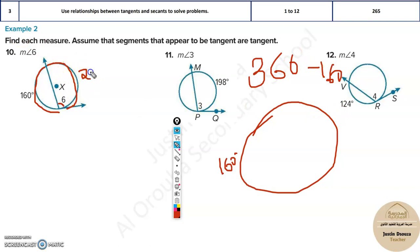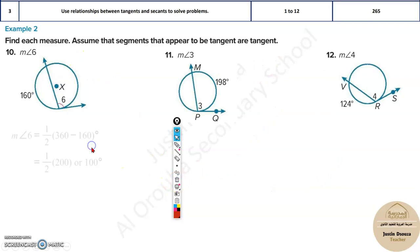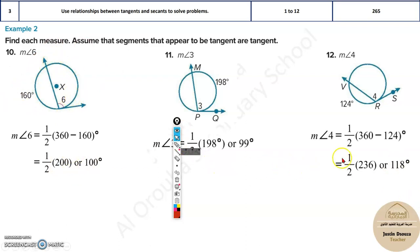So whatever is remaining over here is 200. Now half of 200 would be the answer, so that is 100 degrees. You can directly put this as half of 360 degrees—the total circle—minus 160. That would give you this answer. So that's how you can solve. Please do solve it by yourself and then double check the answers.